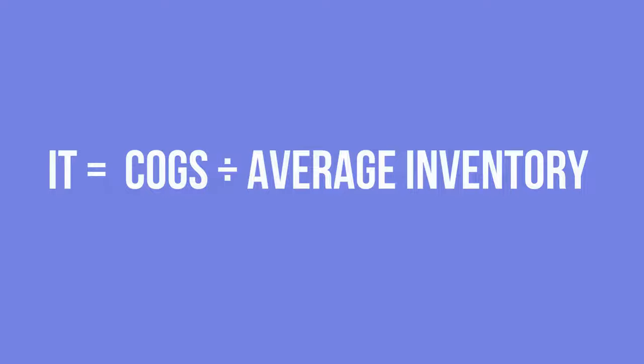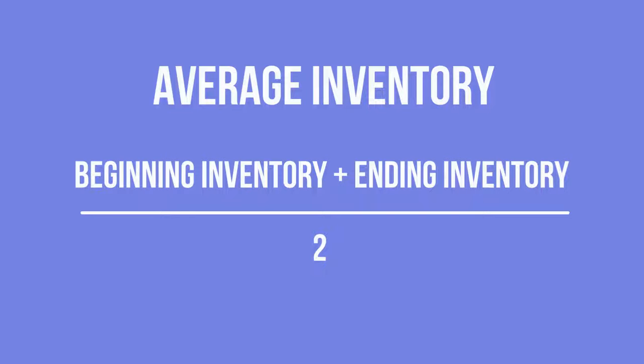How to calculate inventory turnover? The formula for calculating inventory turnover is cost of goods sold divided by average inventory. To calculate average inventory for the year, you simply add the beginning inventory at cost value to the ending inventory at the end of the year and then divide the total by 2.